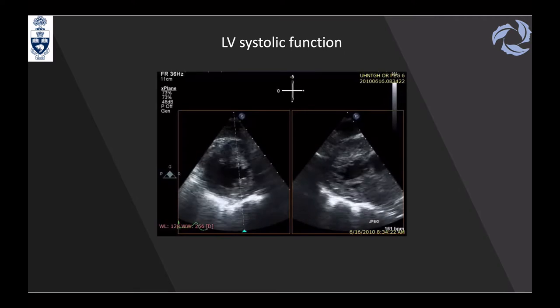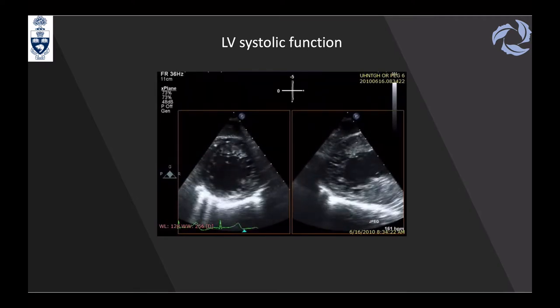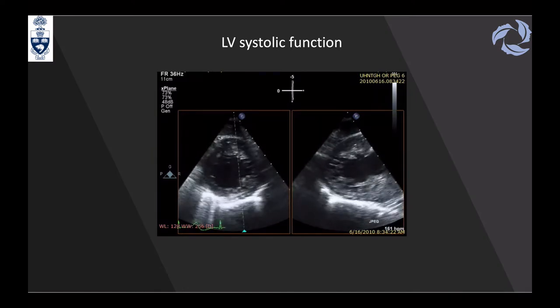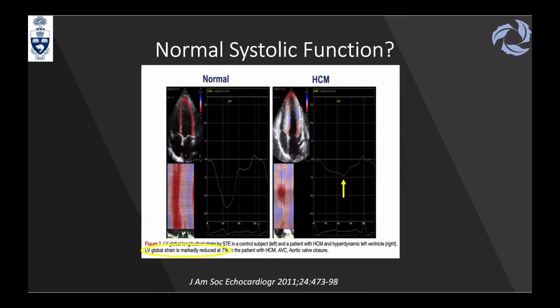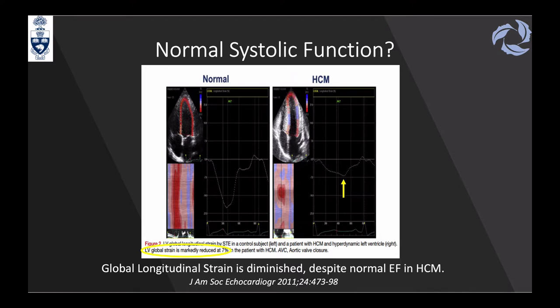LV systolic function in HCM is normally normal or increased due to the thick, powerful muscle. However, a very specific characteristic of HCM is reduction in global longitudinal strain. Of the three strain types—radial, longitudinal, and circumferential—TEE assesses longitudinal strain, which reflects the LV's capacity to shorten. Longitudinal strain is diminished in HCM patients despite a normal ejection fraction.